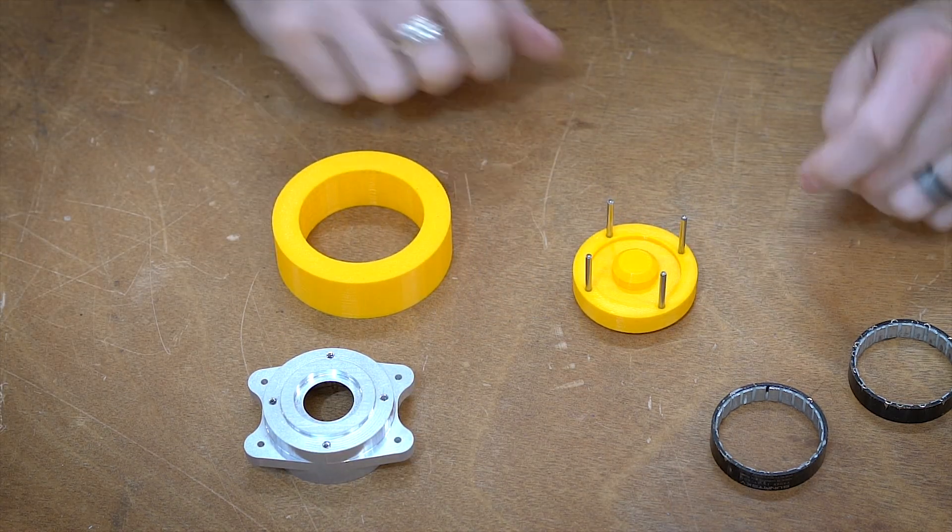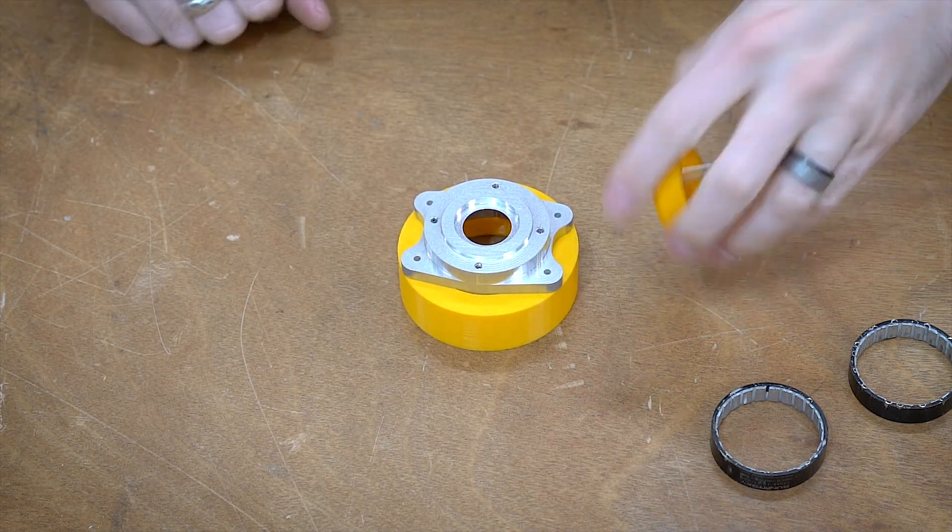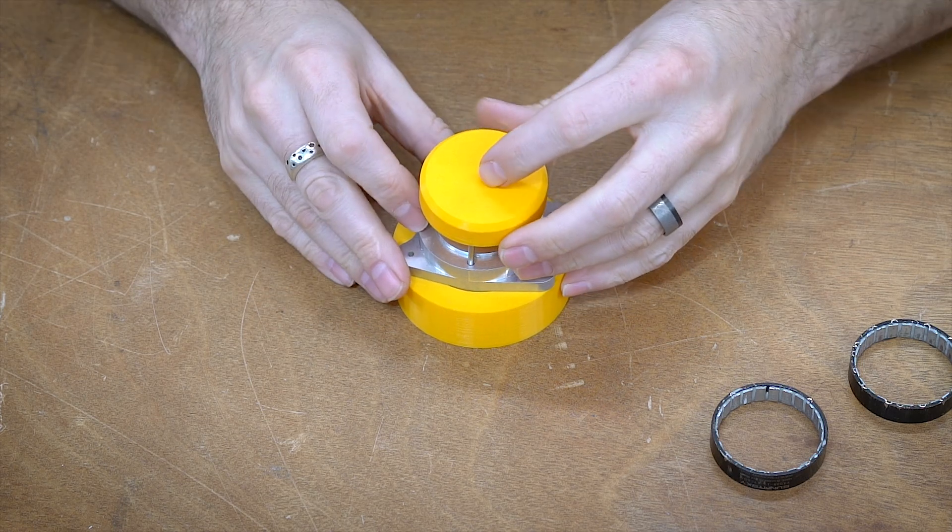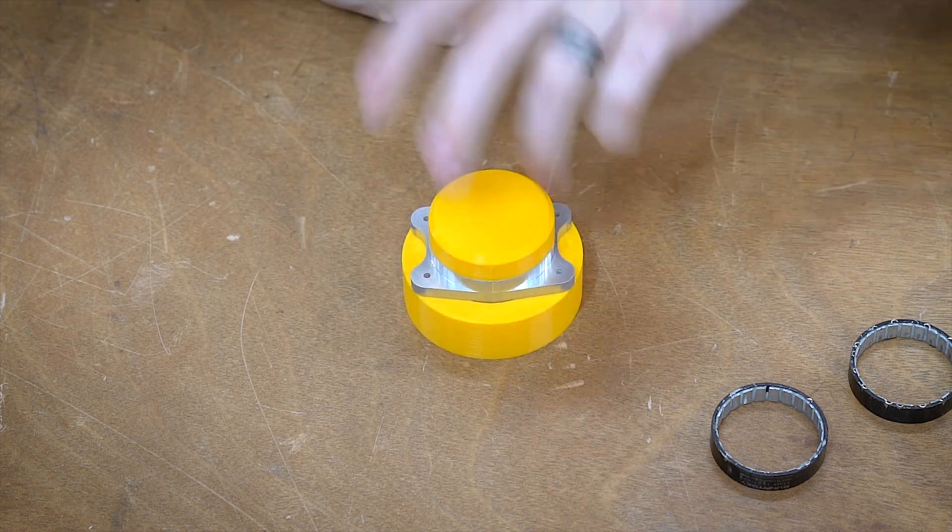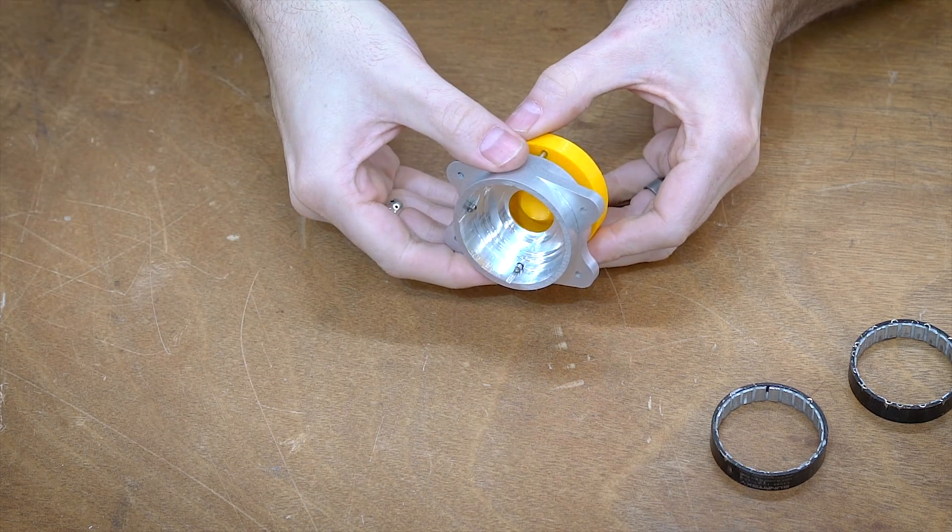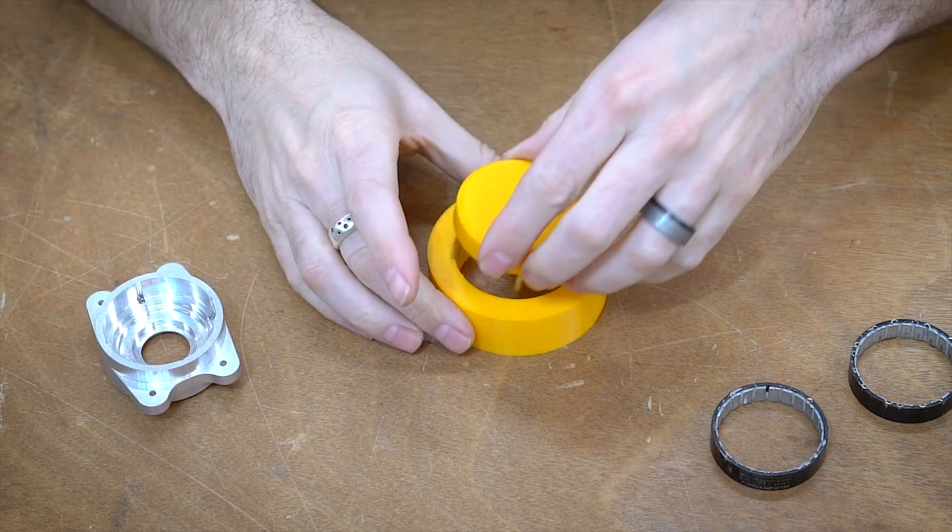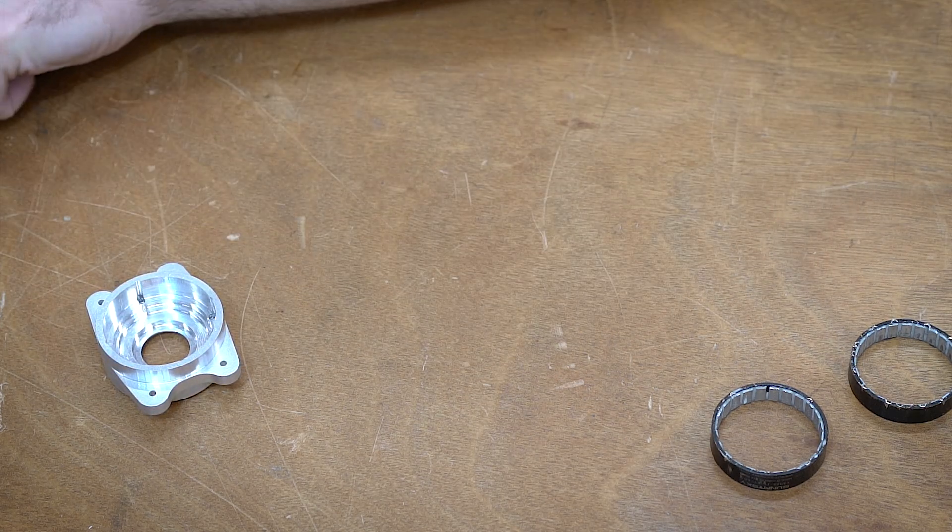This one has dowel pins in it. So what I can do is just set this on there like that, align my dowel pins inside these holes, and then just press out that from down below. You can kind of see the pins acting right there. Really simple stuff. Now, how do you get the ring in there to begin with?